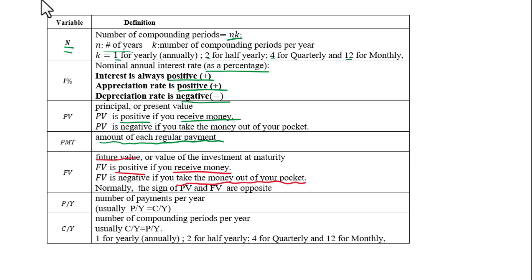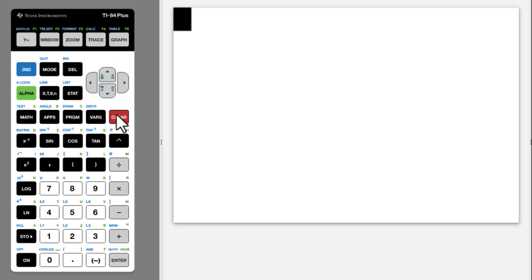Normally, the sign of PV and FV are opposite. Payment per year is related to PMT. Compounding periods per year equals payment per year. This compounding period is related to K. In other words, it's related to this capital N, number of compounding periods.